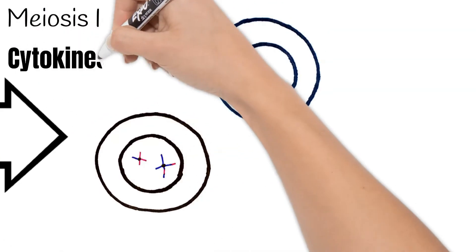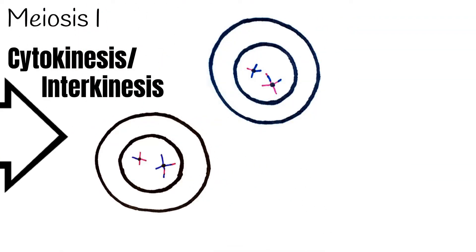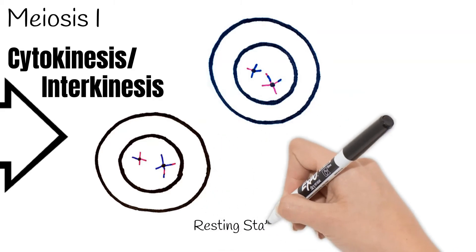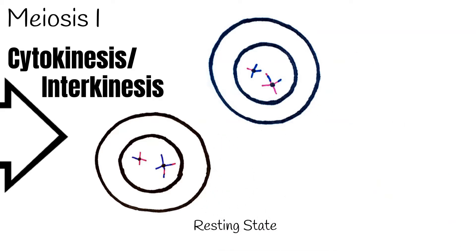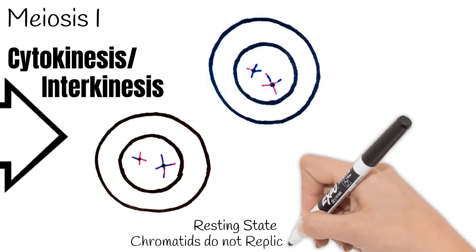During cytokinesis, or interkinesis, the cells are in a somewhat resting state. This is the end of meiosis 1. There is not another interphase, as the chromatids do not need to replicate again.